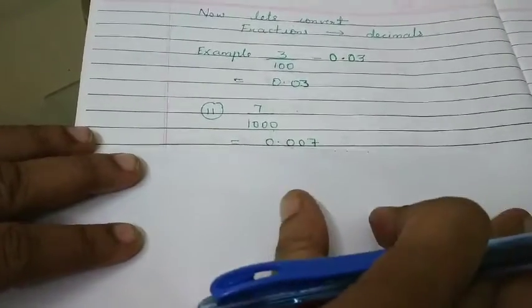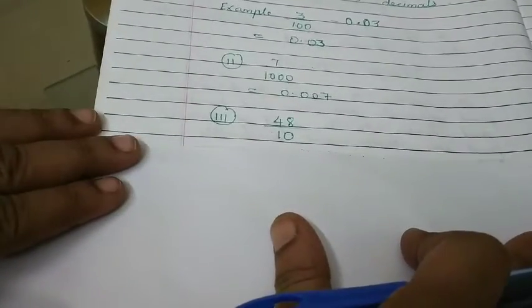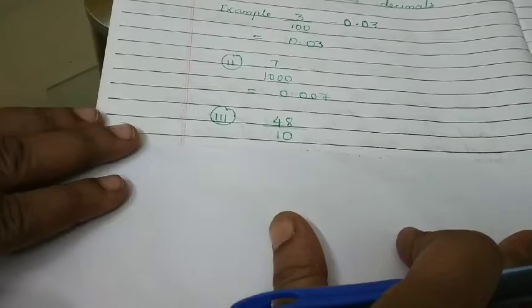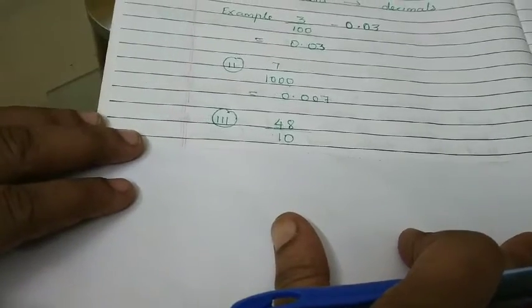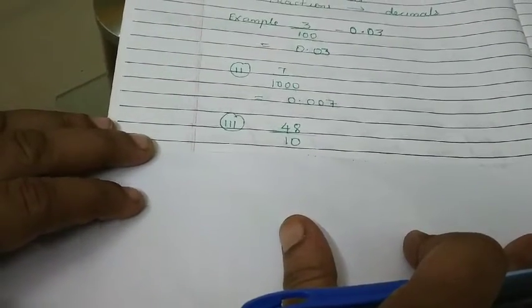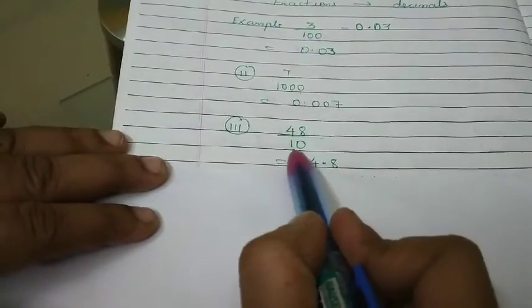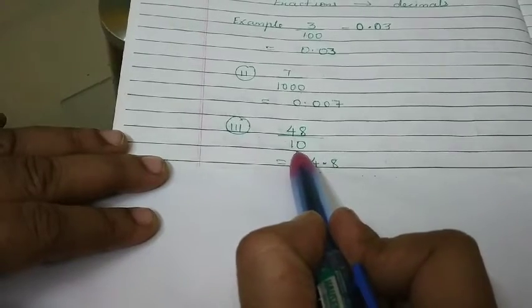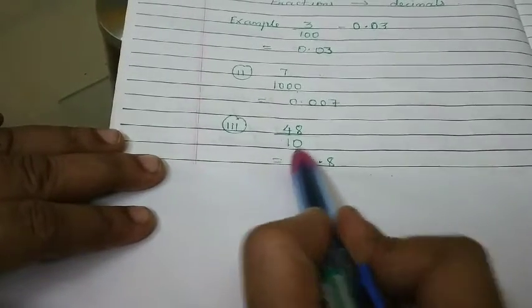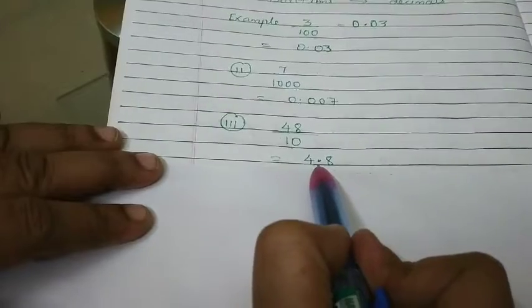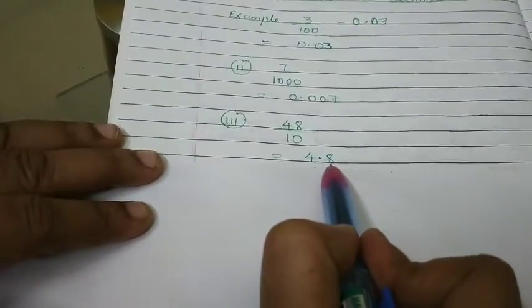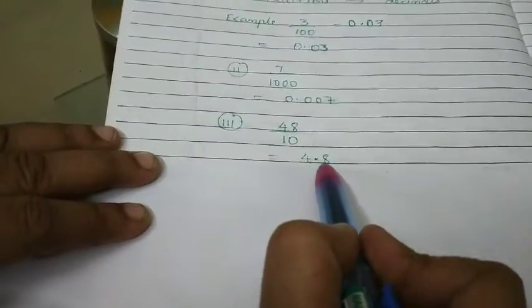Kids, let's see one more example. The example is 48 upon 10. Yes, can you guess the answer? The answer will be 4.8. Very good. You can see that in denominator, we have only one zero. So, in the answer, after point, we should have one digit, that is 8. So, it becomes 4.8.